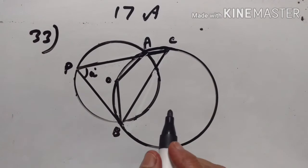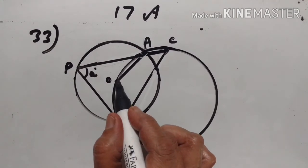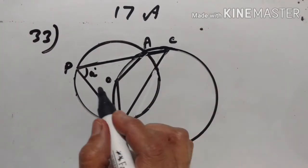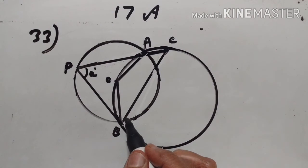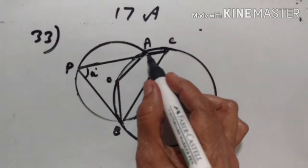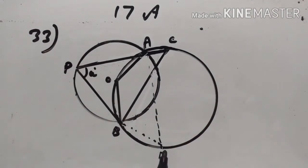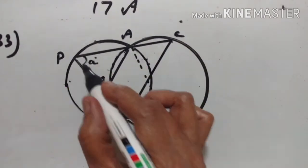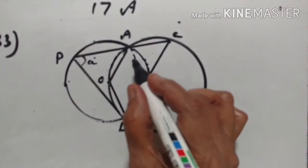Problem number 33. This figure shows two circles which intersect at A and B. The center of the smaller circle, O, lies on the circumference of the larger circle. Angle APB is equal to A degrees. We have to calculate in terms of A the value of obtuse angle AOB. Arc AB subtends angle AOB at the center and angle APB on the circumference. Therefore, angle AOB equals twice angle APB, which means angle AOB equals 2A.